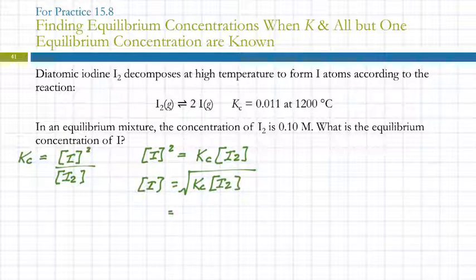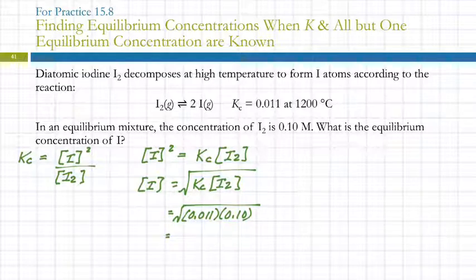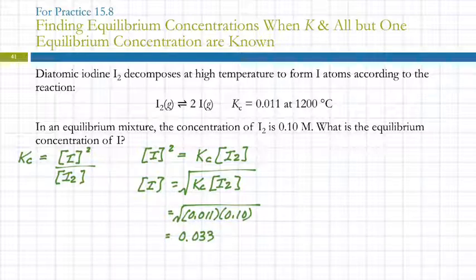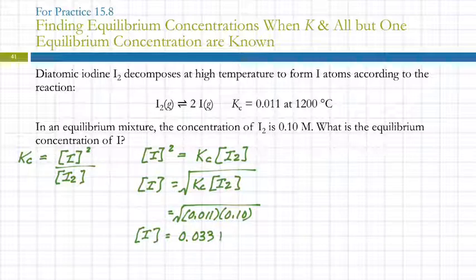Plugging in the known values — Kc is 0.011 and [I₂] is 0.10 — and taking the square root of the whole thing gives us 0.033. Does that number have a unit? Yes — this is a concentration, so the unit is moles per liter, or molarity.